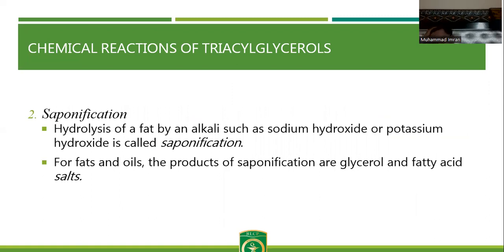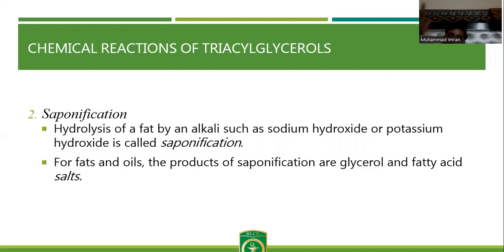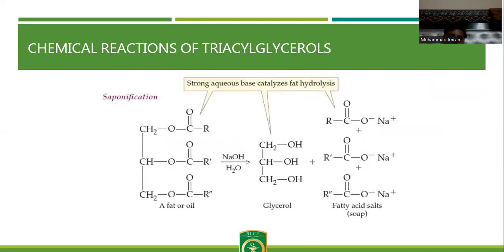Saponification: what is saponification? The hydrolysis of fat by an alkali — sodium hydroxide, potassium hydroxide, or calcium hydroxide — is called saponification. When we add sodium hydroxide to oil, fatty acids get detached from the glycerol, and sodium attaches with the carboxyl group of the fatty acid, forming a soap. That's why this reaction is known as saponification. The products of saponification are glycerol and fatty acid salts. Sodium hydroxide breaks the ester bond and produces glycerol, which can be separated by a separating funnel, and soaps which are used in our laundries.